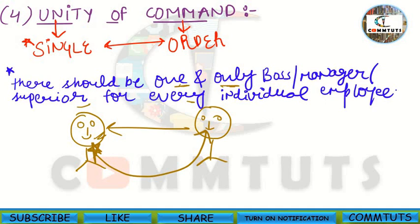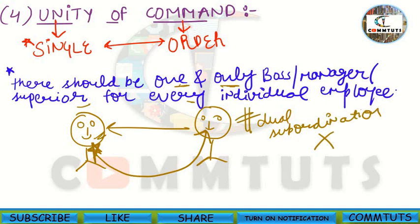Henry Fayol says there should not be dual subordination. If one subordinate starts receiving orders from two or more superiors, confusion will start in the subordinate's mind. They will not understand which work should be the priority.